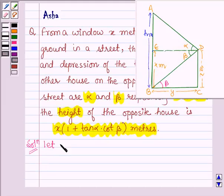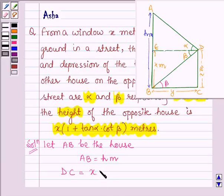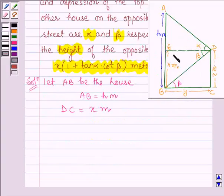So, let AB be the house and we have supposed that AB is equal to H meters. Also, DC is given to us as x meters which is the window above the ground. Now, let us suppose that BC is equal to y and this implies BC is equal to ED is equal to y meters.